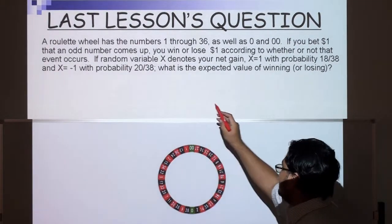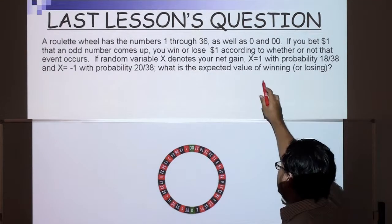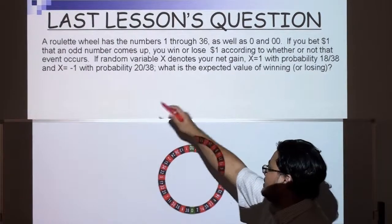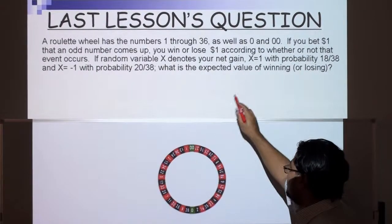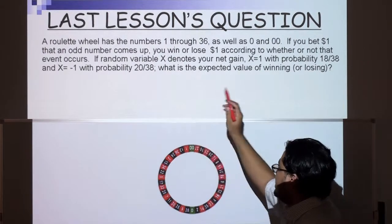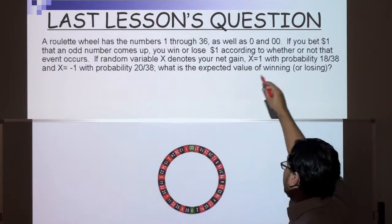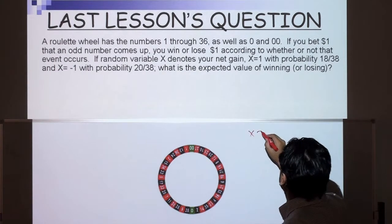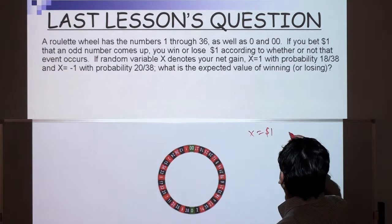A roulette wheel has the numbers 1 through 36 as well as 0 and 00. If you bet $1 that an odd number comes up, you win or lose $1 according to whether or not that event occurs. If random variable x denotes your net gain, x equals 1 with probability 18 over 38.